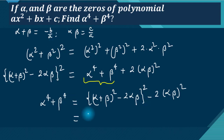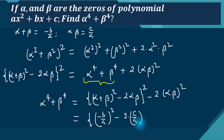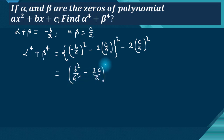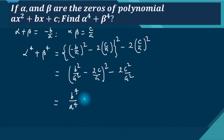Substituting the values: alpha plus beta equals minus b upon a and alpha beta equals c upon a. So we get: b squared by a squared minus 2c upon a, whole squared, minus 2 times c squared upon a squared. We can expand this as b to the fourth upon a to the fourth plus...